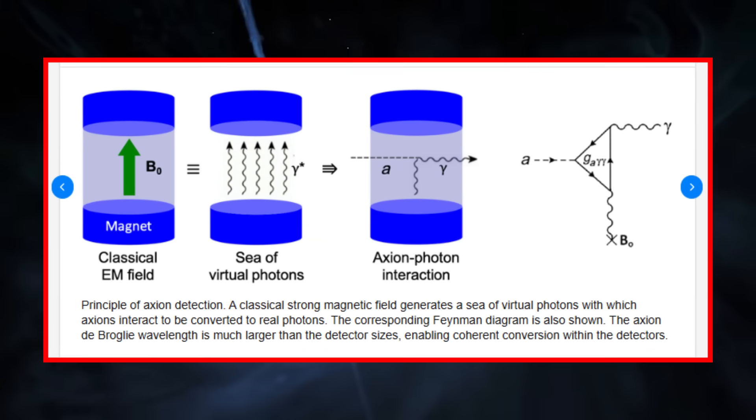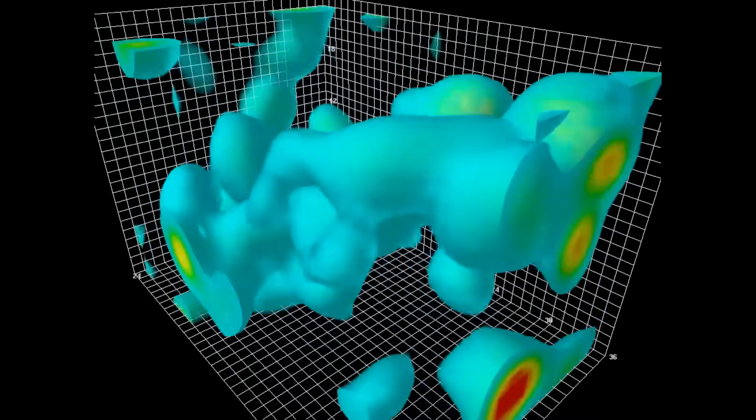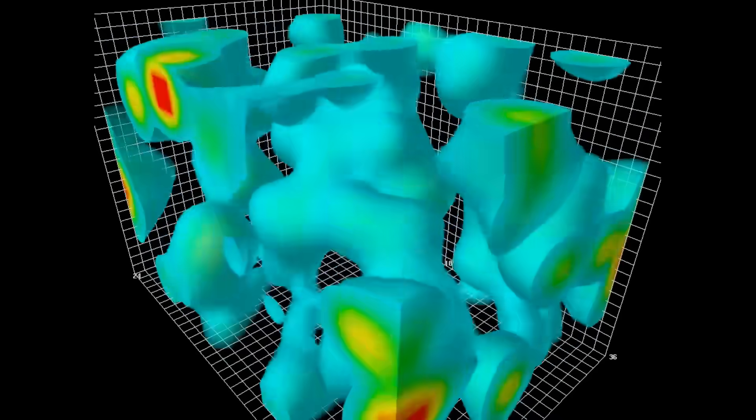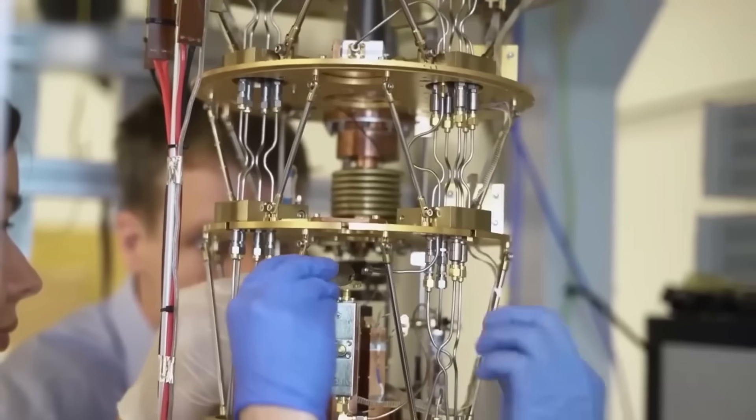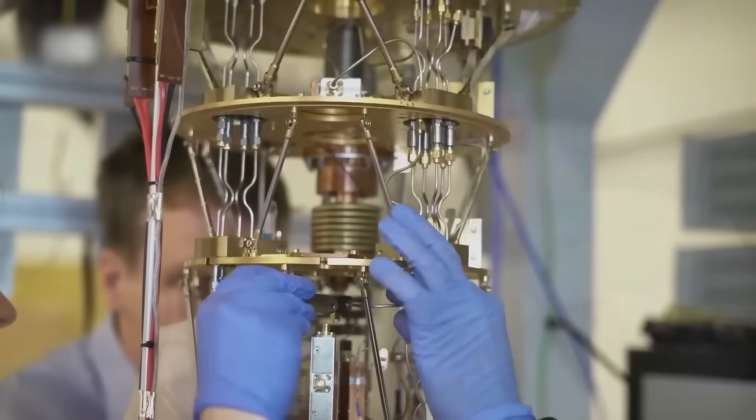But if this link holds up, it could provide a powerful new method for studying axions. Not in deep space observatories, but inside quantum computers themselves. Could it be that in our quest to build better quantum machines, we've accidentally stumbled upon the missing piece of dark matter?